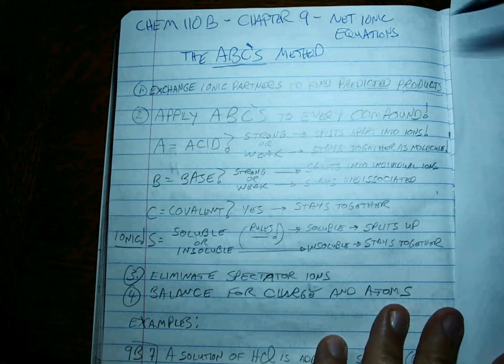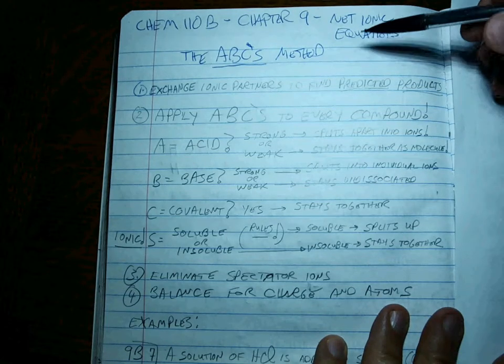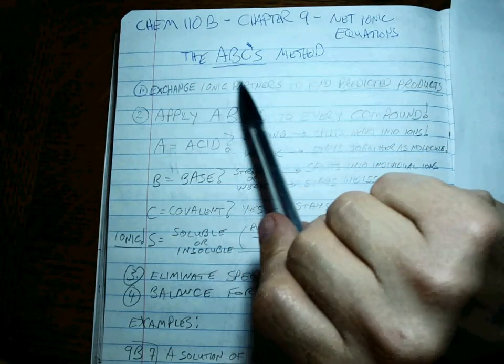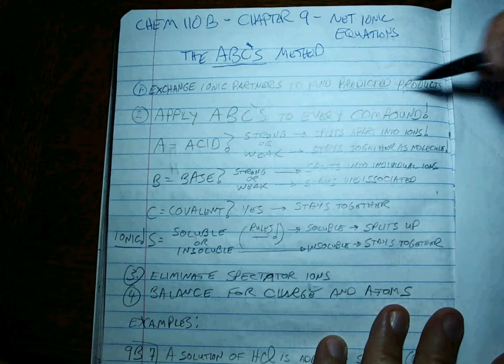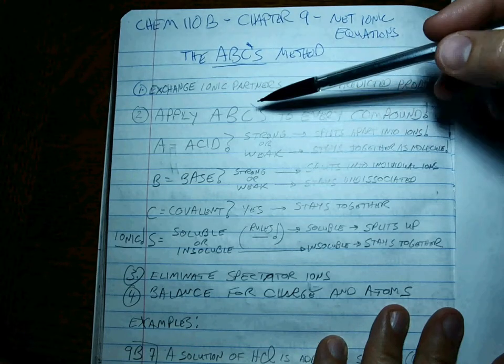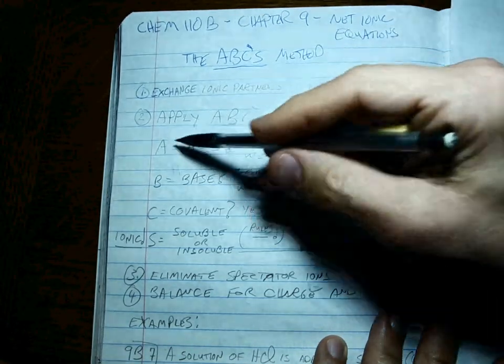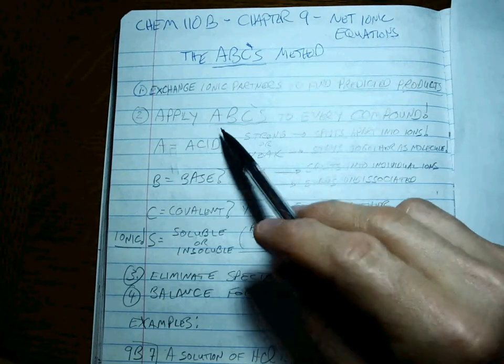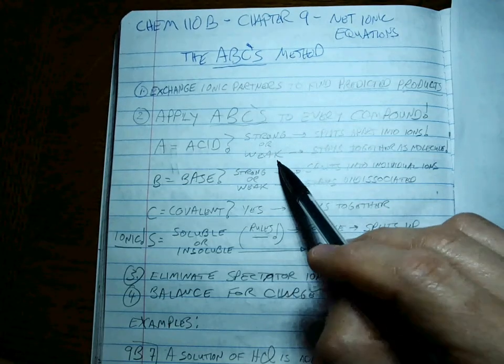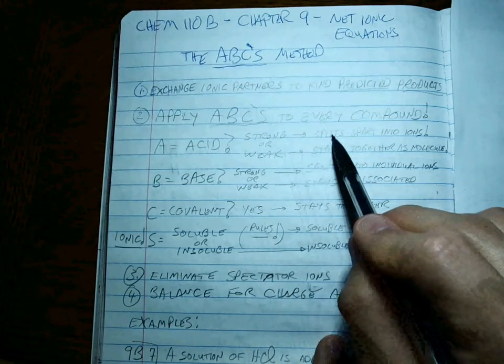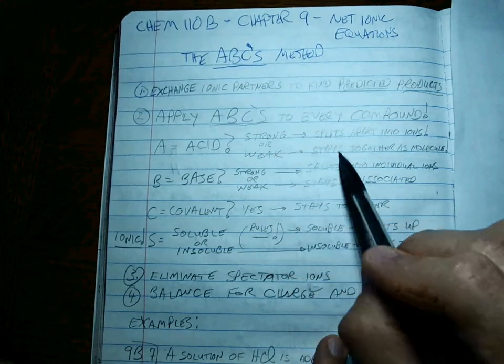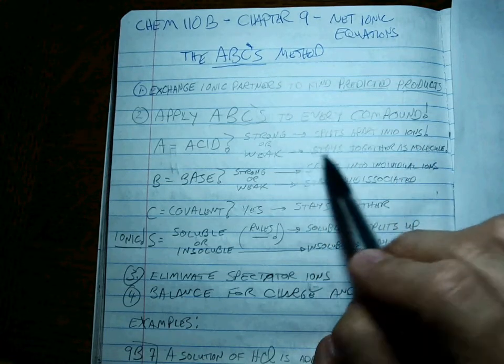I'll just jump right into it. What this will help you most with is those really hard problems on 9B, the last couple. Your first job is to exchange ionic partners to find the predicted products, all of them. Then, number two, you apply the ABCs to every compound. A means acid. You decide, is the compound an acid? If it is, is it strong or weak? If it's strong, it splits apart into ions. If it's weak, then it stays together as a molecule.